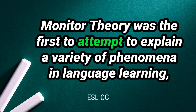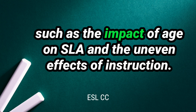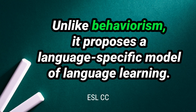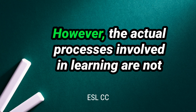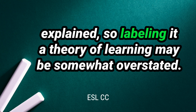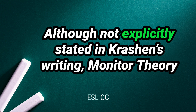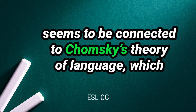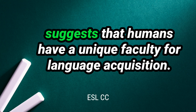Monitor theory was the first to attempt to explain a variety of phenomena in language learning, such as the impact of age on SLA and the uneven effects of instruction. Unlike behaviorism, it proposes a language-specific model of language learning. However, the actual processes involved in learning are not explained, so labeling it a theory of learning may be somewhat overstated. Although not explicitly stated in Krashen's writing, monitor theory seems to be connected to Chomsky's theory of language, which suggests that humans have a unique faculty for language acquisition.